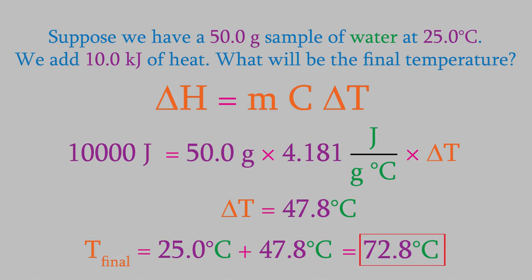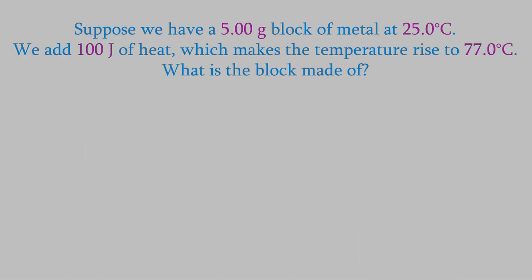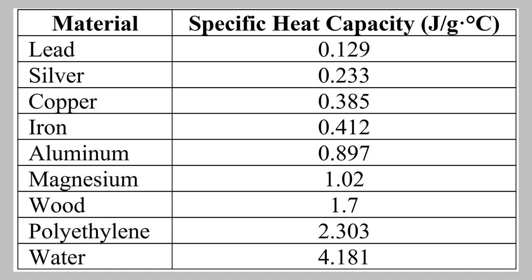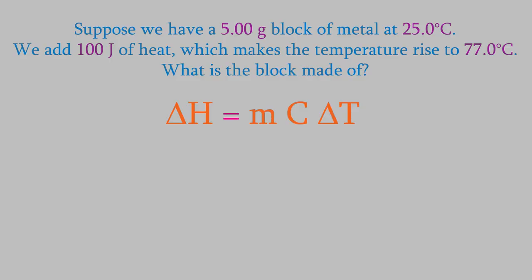Let's try another problem. Suppose we have a 5.00 gram piece of metal at 25.0 degrees C. We add 100 joules of heat and find that the temperature increases to 77.0 degrees. What kind of metal is it? This problem shows us one way that we could identify an unknown metal. Every metal has a different ability to absorb heat. You might remember that's what the specific heat capacity is telling us. So we'll use our equation again, and this time we want to solve for the specific heat capacity.